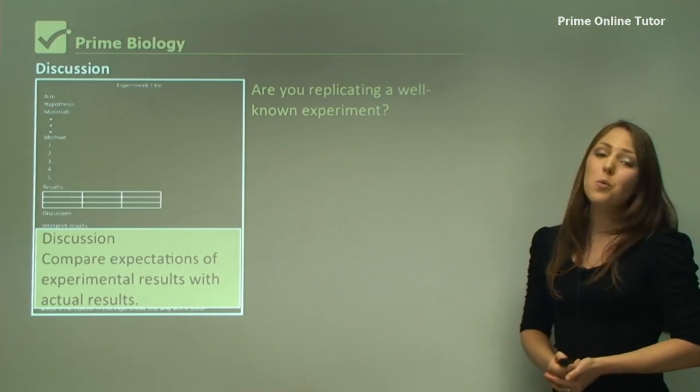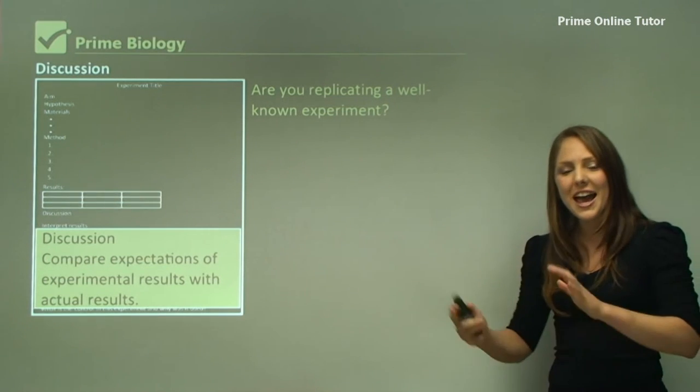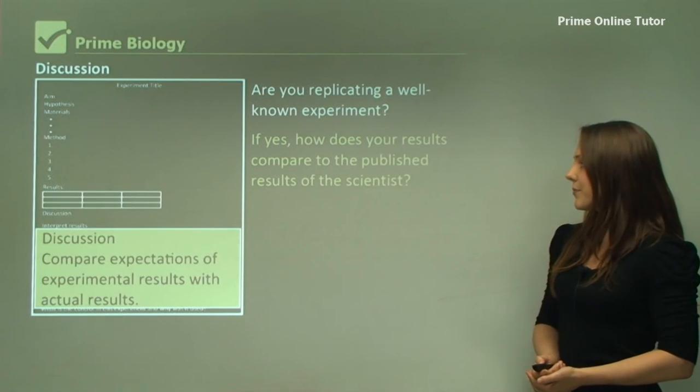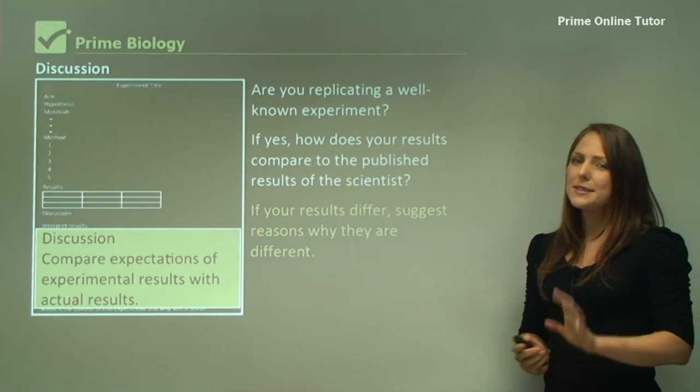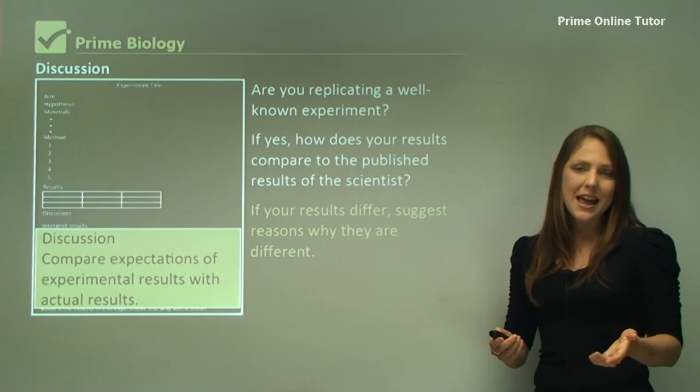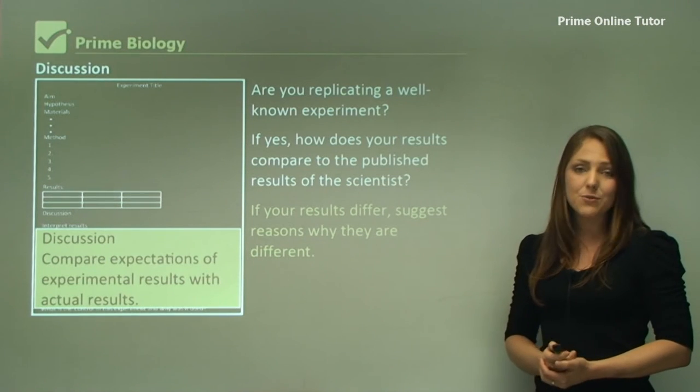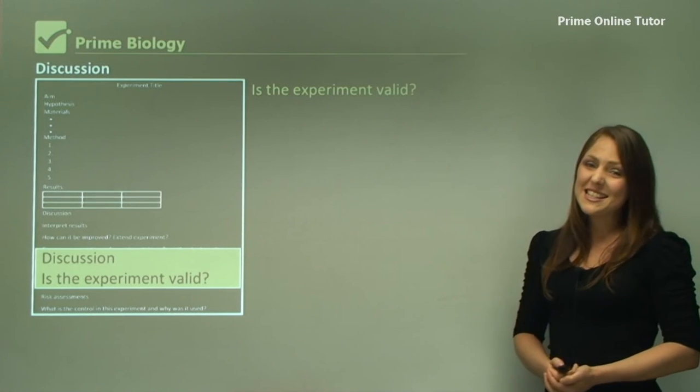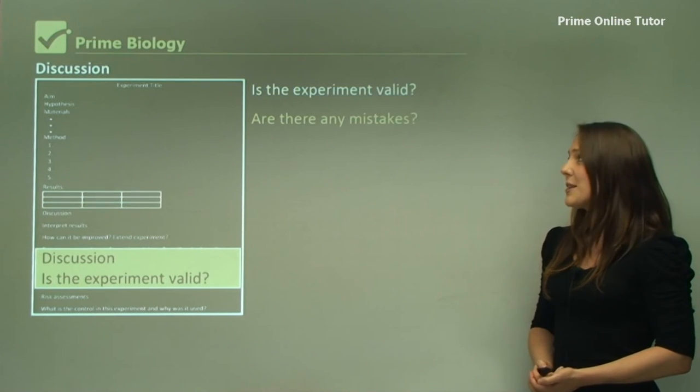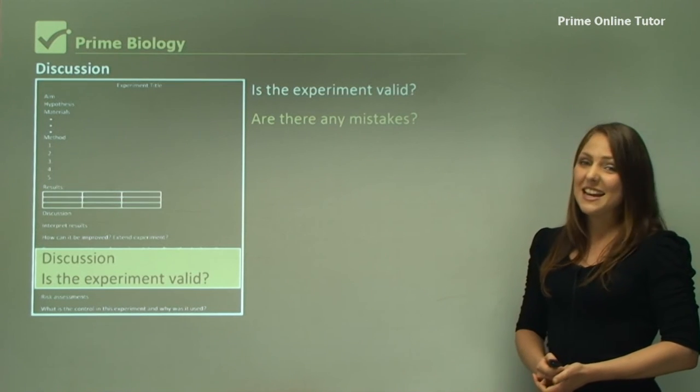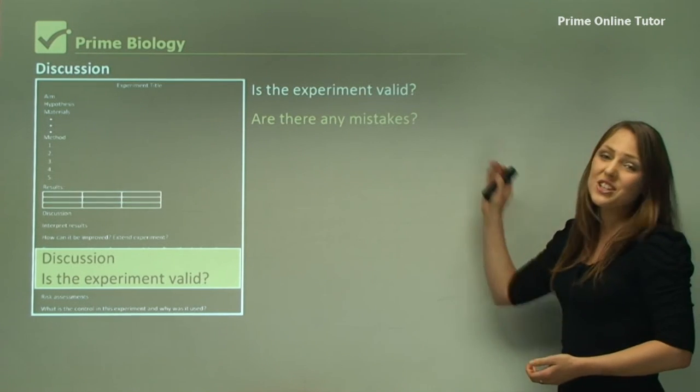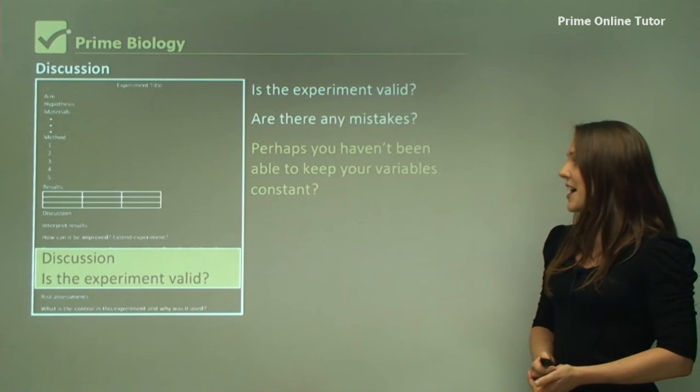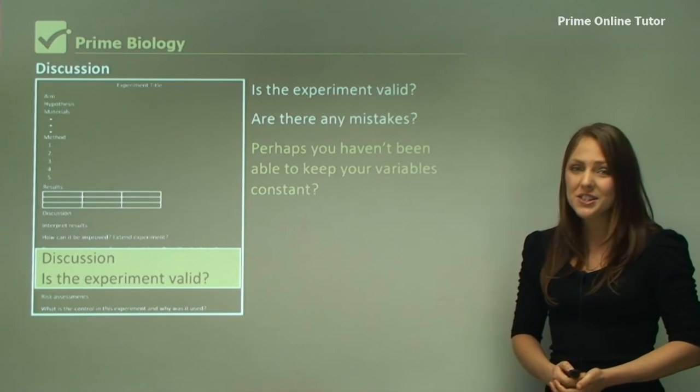Are you replicating a well-known experiment? If so, how do your results compare to previous results? If your results differ, suggest reasons why they were different. Perhaps you had a different setup or different equipment. Is the experiment valid? This is very important. Are there any mistakes in the experiment? This leads to the validity of your experiment. Perhaps you haven't been able to keep your variables constant for some reason.